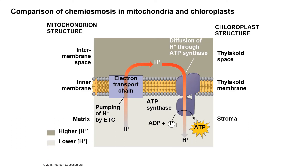This figure shows the spatial organization comparison of chemiosmosis in mitochondria and chloroplasts. For mitochondria, we can see the intermembrane space, the membrane, and the matrix. For chloroplasts, we see the thylakoid space, the thylakoid membrane, and the stroma. Embedded in both membranes are the electron transport chain and ATP synthase. In mitochondria, protons are pumped from the matrix to the intermembrane space, creating a proton gradient. In chloroplasts, protons are pumped from the stroma into the thylakoid space.